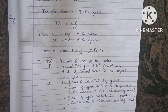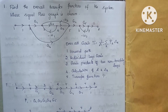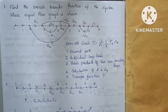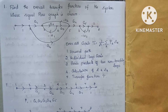To calculate the signal flow graph overall gain, we first calculate the forward path, individual loop gain, individual product of two non-touching loops, three non-touching loops, and four non-touching loops. Then we calculate delta-k and finally the transfer function T.